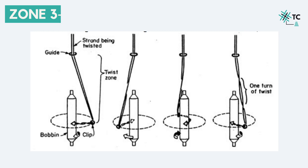Now there is a very important concept to note. We know that both the spindle as well as the traveler rotate, but they have a difference in rotation speed. This is due to the relatively high friction the traveler experiences on the ring and the atmospheric resistance. This difference in speed is actually necessary — because this difference makes it possible for the yarn to be wound onto the bobbin. If both the traveler and the spindle are rotating at the same speed, the winding won't be able to take place. Hence, the speed difference is essential.